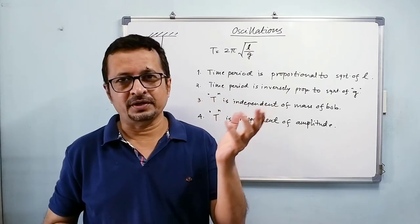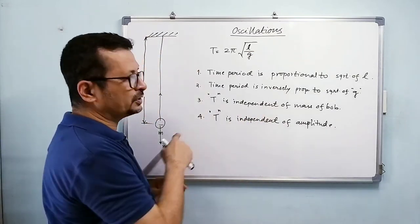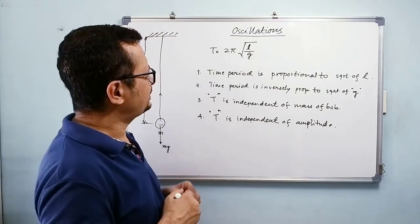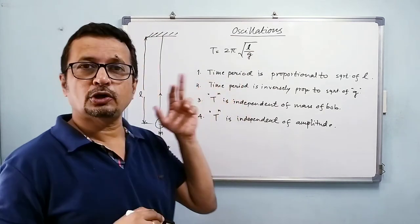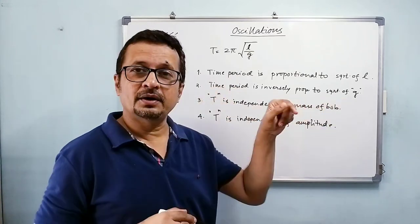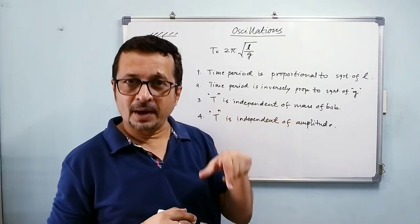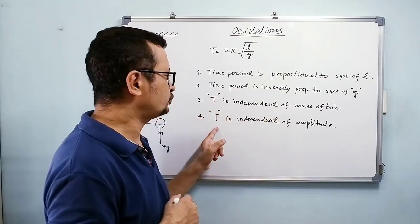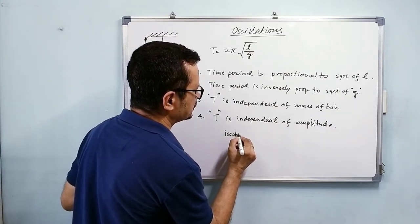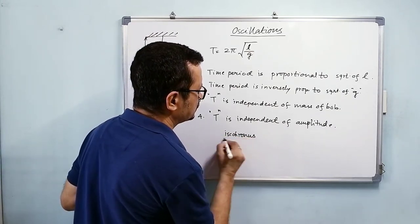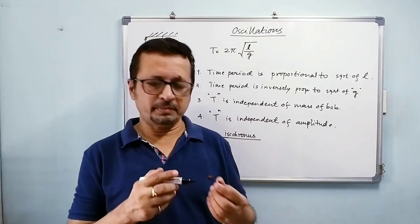So these four statements can be called laws of simple pendulum. The first law you can call it law of length, the second one law of acceleration due to gravity, the third one is law of mass, and the fourth one is called law of isochronous.